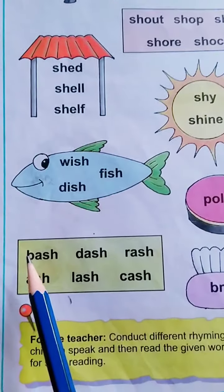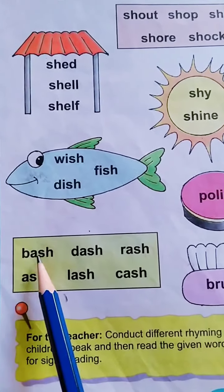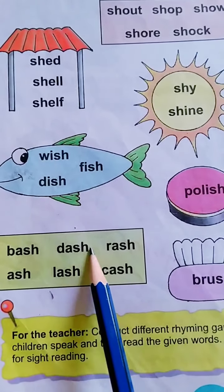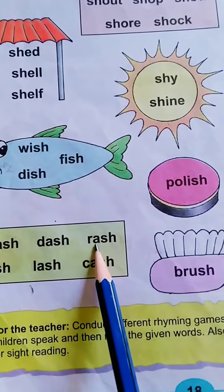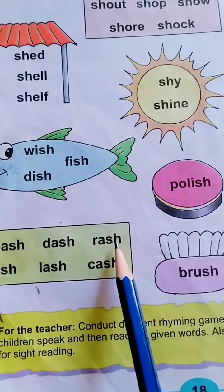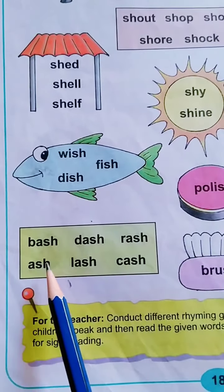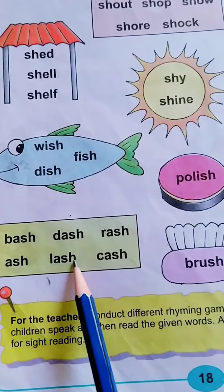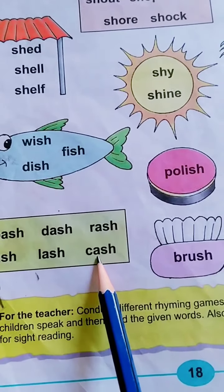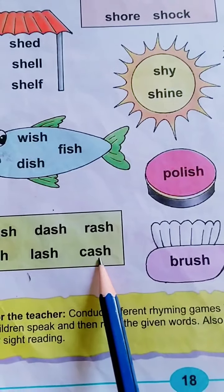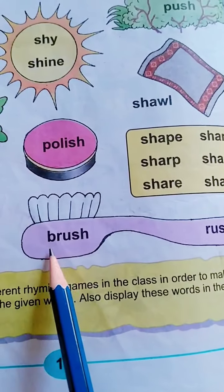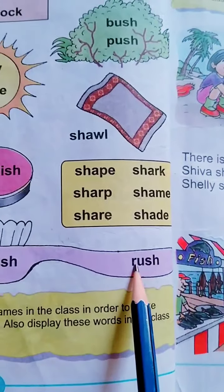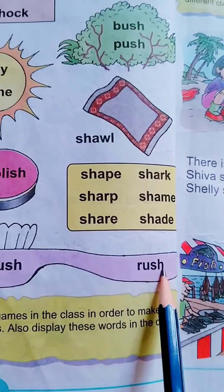Next word is B-A-S-H: Bash. D-A-S-H: Dash. R-A-S-H: Rash. A-S-H: Ash. L-A-S-H: Lash. C-A-S-H: Cash. Next word is B-R-U-S-H: Brush. R-U-S-H: Rush. Let us read again.